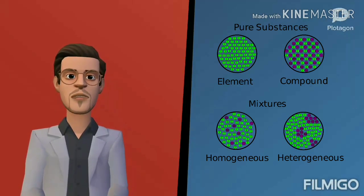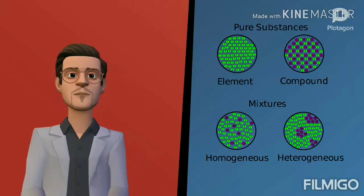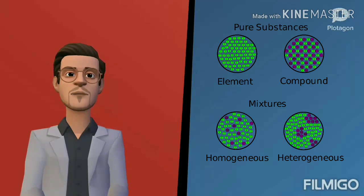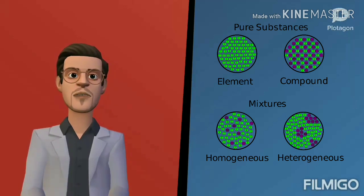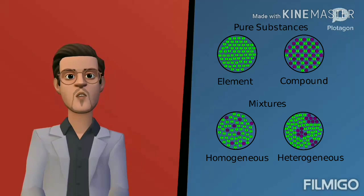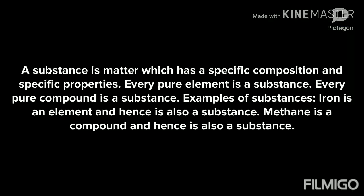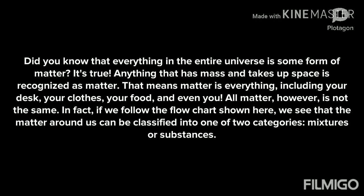Hello friends, today we discuss: number one, what is a substance; number two, what are examples of substances; and number three, what is a common substance. A substance is matter which has a specific composition and specific properties. Every pure element is a substance, and every pure compound is a substance. Examples include iron, which is an element, and methane, which is a compound.